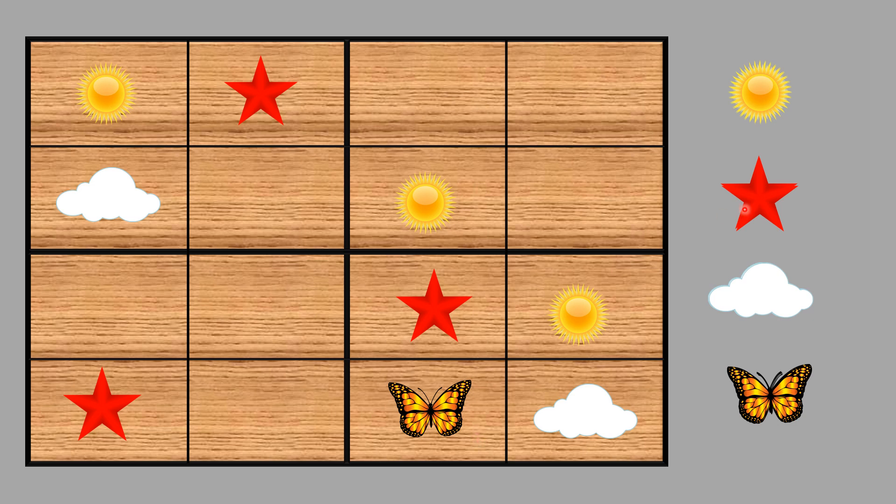For that, we have to look out which row or column has the most number of pictures. Like this one. This column has three pictures already, so it's easy to decide which picture is remaining. In this, we have sun, star, and butterfly, so the missing picture is cloud. That's right. Let's move on.